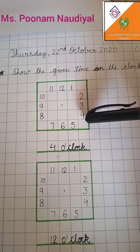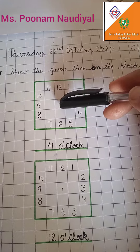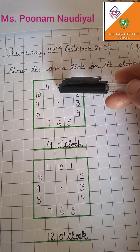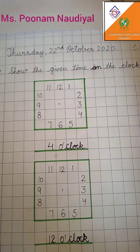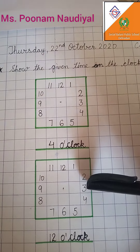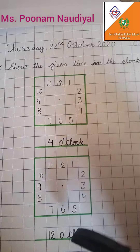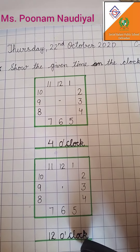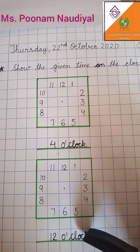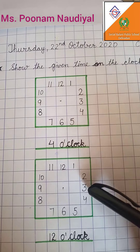The short hand will be towards four and the long hand will be towards 12. In the next example, the time is 12 o'clock. This clock will show 12 o'clock.